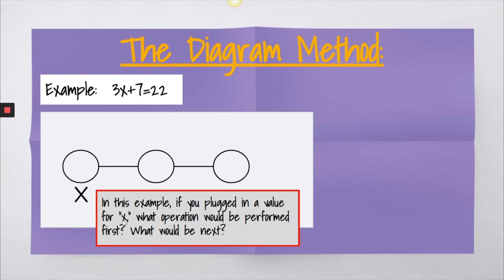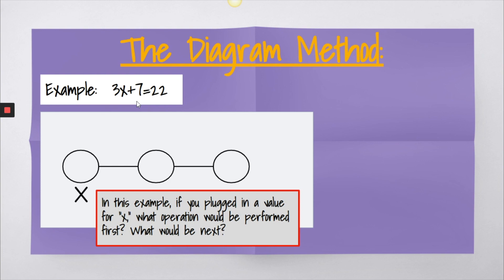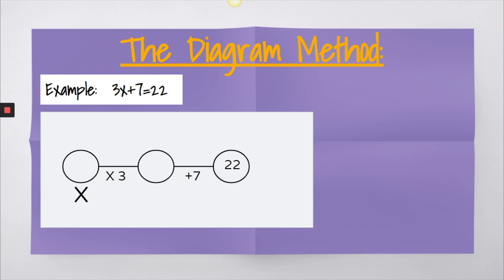So in order to get going on the diagram method, the questions you want to ask yourself is if you plugged in a value for x, what operation would be performed first? What would be next? So if I take a look at my equation, 3x plus 7, the first thing I would do would be if I plugged in a number for x, the first thing I would do is multiply that number by 3. The second thing I would do is I would add 7. Notice that we place those operations below the line on each section. Now once I do that, to whatever number I plug in, my result should be 22.